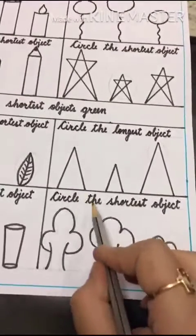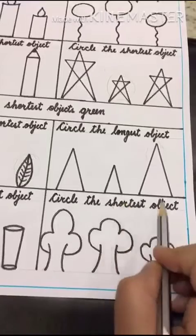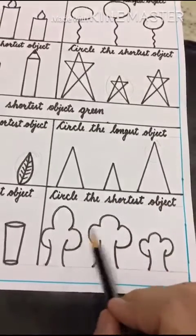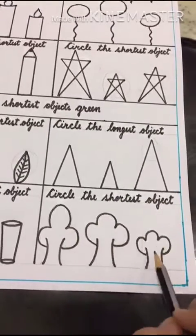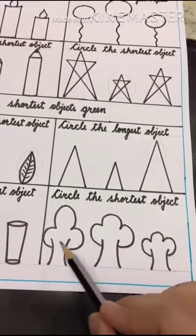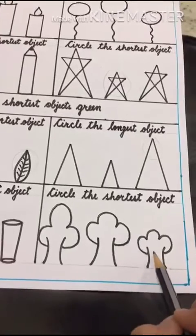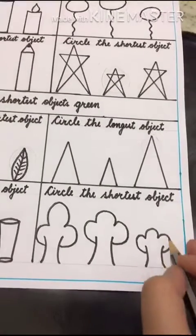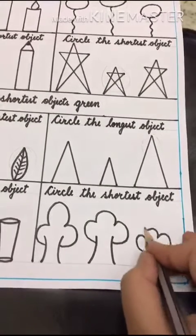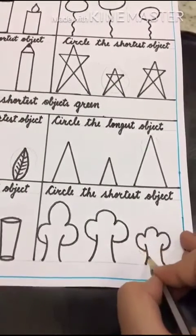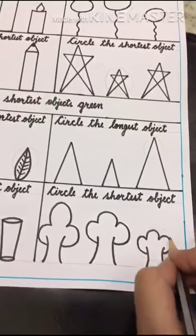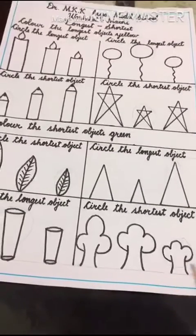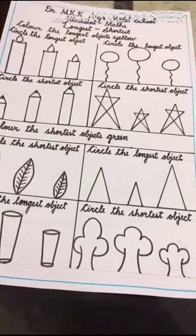Circle the shortest object. Which one is shortest? Yes, this one. You have to circle it. Thank you.